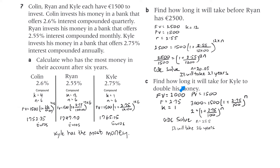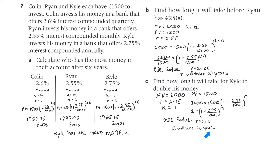Part C: find how long it will take for Kyle to double his money. Kyle has 1,500, so double is 3,000. Present value is 1,500, R is 2.75, K is 1. We solve for N using the calculator's solve function and get 25.5, so it will take 26 years.